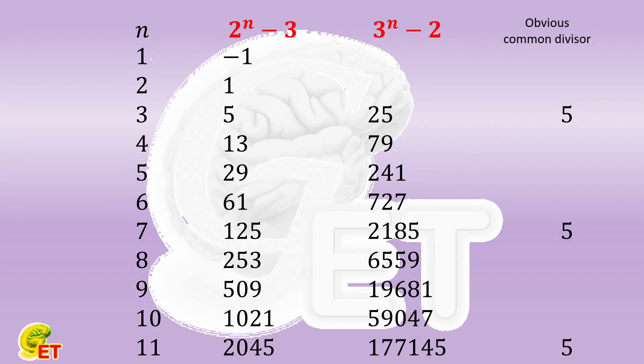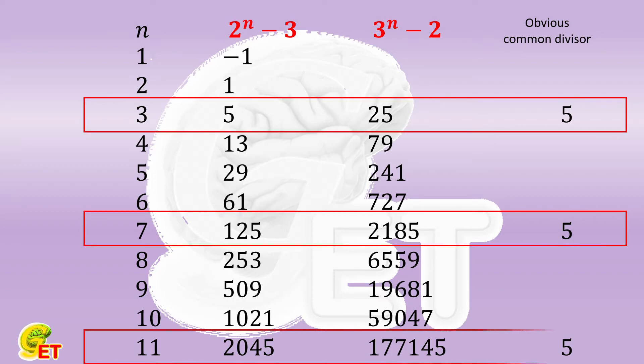Sure. Starting from 3, every time when n increases by 4, there is a pair of results that have a common divisor of 5.